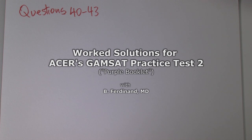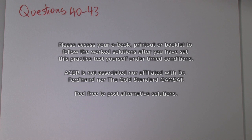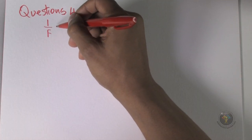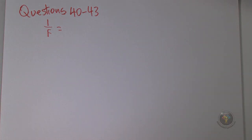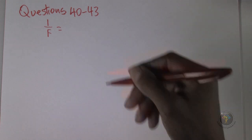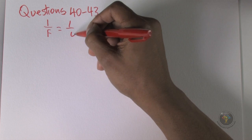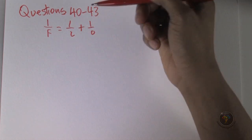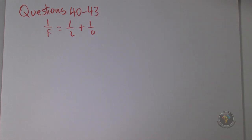Questions 40 to 43: a small coin is placed on the principal axis and the lens equation is given. ACER sometimes changes the symbols they use for equations, so it's more important that you understand what an equation means than get caught up in the symbols. They love to change symbols just to see if you really understand. I tend to write it as 1/F = 1/I + 1/O, where I is the image, O is the object, and F is the focal length.